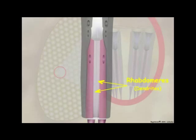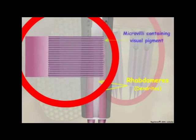Together, all of the individual rhabdomeres are referred to as the rhabdom. Rhabdomeres consist of parallel microvilli containing light-detecting visual pigment molecules embedded into their plasma membranes.